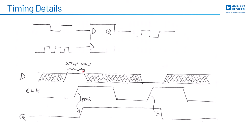After the hold time requirement is met, the data can do whatever it wants. It can also do whatever it wants on the falling clock edge, because this flop is only sensitive to rising edges. Setting up with a zero data instead of a one: I meet my setup time requirements, a rising clock edge occurs, a zero propagates to the output, and then after the hold time requirement is met, the data can do whatever it wants again.